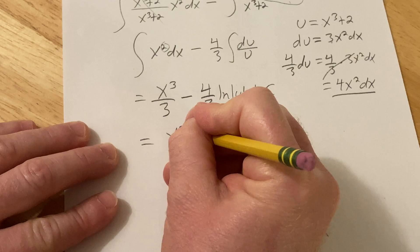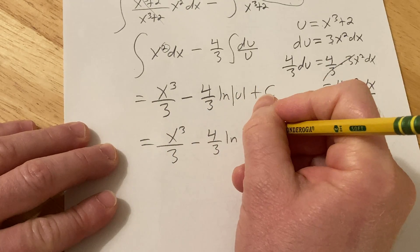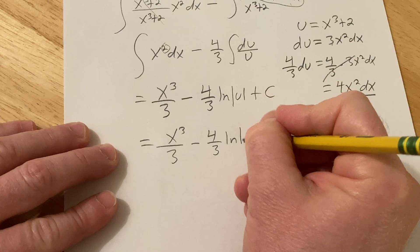This will be x cubed over 3 minus 4 thirds, natural log, absolute value, and then u is x cubed plus 2.